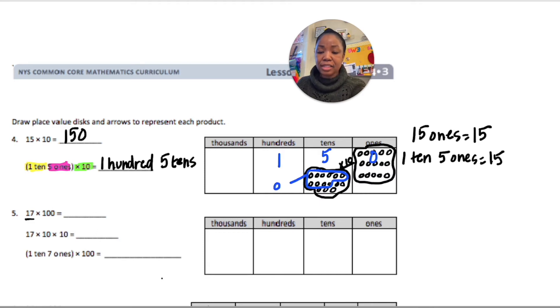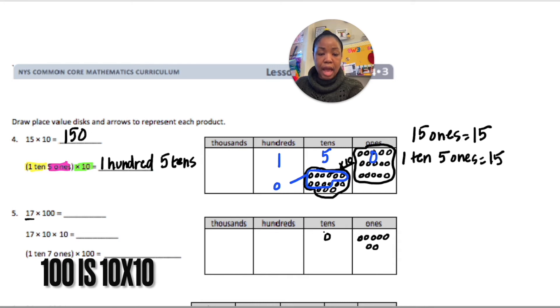Now, for number 5. Let's show this as 1 ten and 7 ones. I'm going to multiply this by 100. I know that when I multiply times 100, that's times 10, 2 times. That's times 10 times 10.